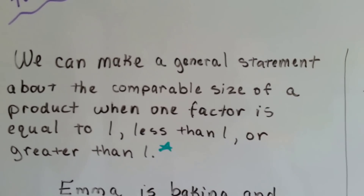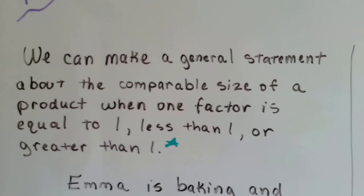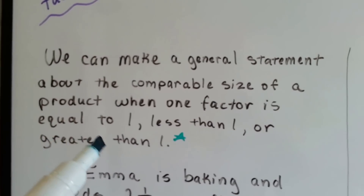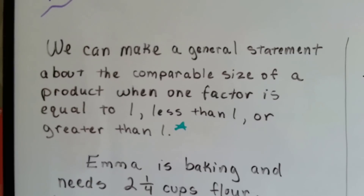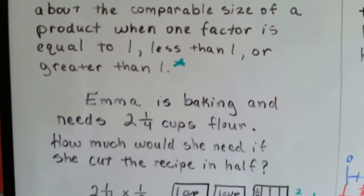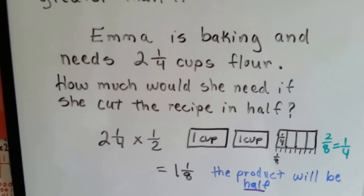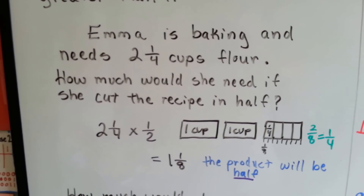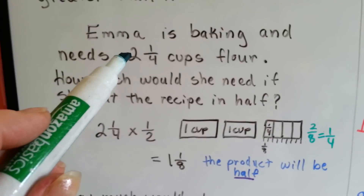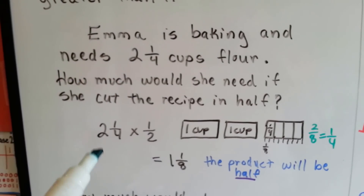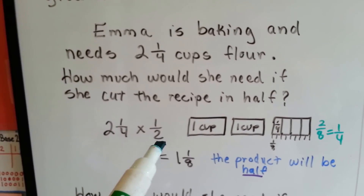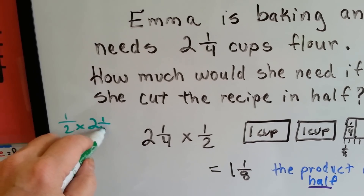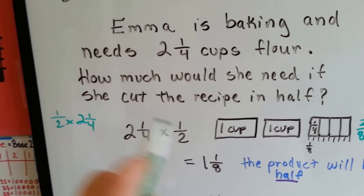Pay attention to that little green star because I'll show you at the end. When we compare the sizes of the products when a factor is equal to 1, less than 1, or greater than 1, we can make a general statement. Emma is baking and needs 2 and 1 fourths cups of flour. How much would she need if she cut the recipe in half? So it's like saying half of 2 and 1 fourths, or 2 and 1 fourths times a half. The half could have been on either side.